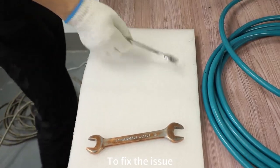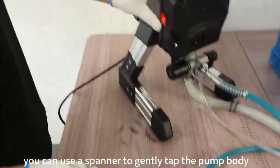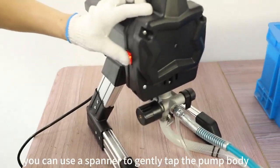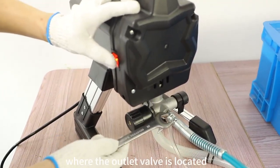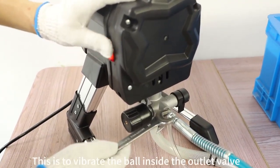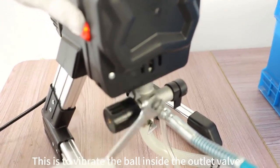To fix the issue, you can use a spanner to gently tap the pump body, where the outlet valve is located. This is to vibrate the ball inside the outlet valve.